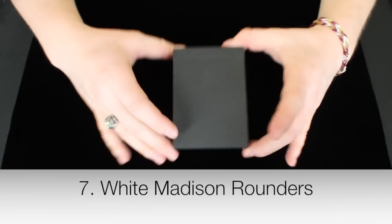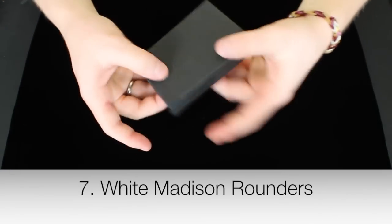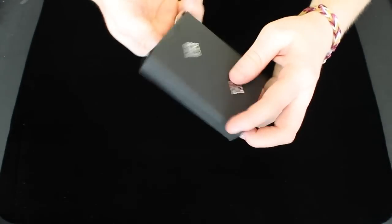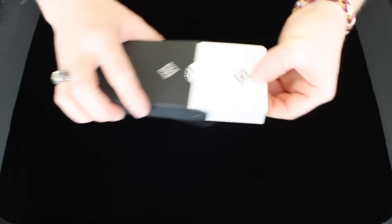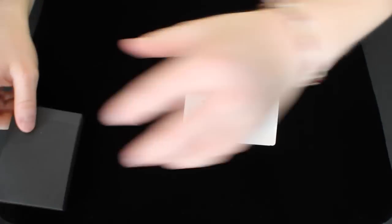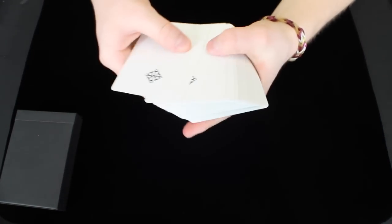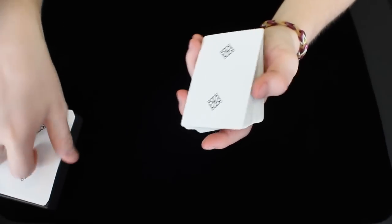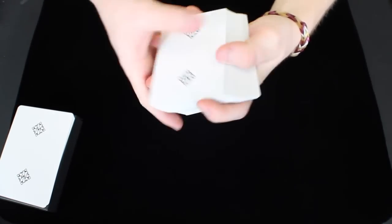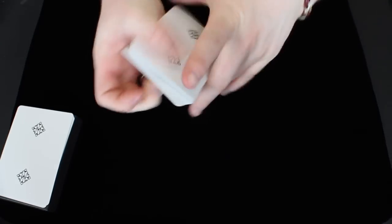At number 7 we have the Madison White Rounders. This is a very minimalistically designed deck as you can tell from the tuck box. But out of all the rounders, dealers, hustlers, players, whatever, I have to say that this one is my favorite. I think this one handles honestly the best out of all of the Madison cards. It is very durable. The stock, the finish is great. I think the overall look with the no borders, I think it's something very cool. I really like that about it.